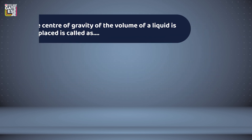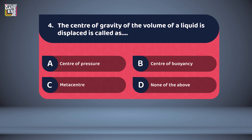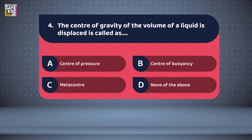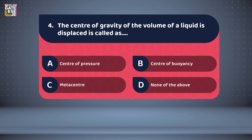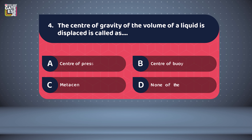Question 4: The center of gravity of the volume of liquid displaced is called as — Option A: center of pressure; Option B: center of buoyancy; Option C: metacenter; Option D: none of the above. You can comment your answers below. Learn from the best.